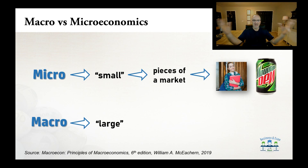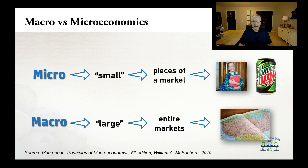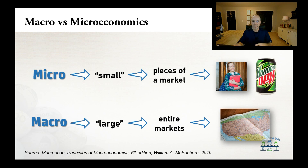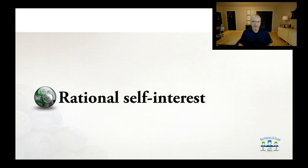Microeconomics looks at the small pieces of a market. But macroeconomics — macro means large, big picture, big scale, big scope — is talking about entire markets, like national markets. Macroeconomics is the study of how a whole nation fulfills its unlimited wants and needs with its limited resources. In this course we'll focus on the entire nation as a whole, not individual buyers and sellers.